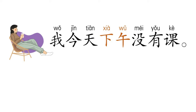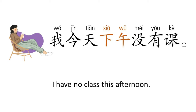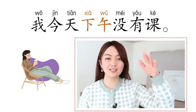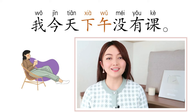Last one: 下午 is 'afternoon.' 下午. 我今天下午没有课 means 'I have no class this afternoon.' 我 is 'I', 今天 is 'today', 下午 is 'afternoon', 没有 means 'not have', 课 is 'class.' 我今天下午没有课.